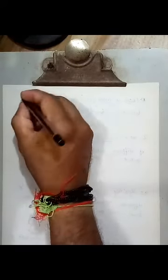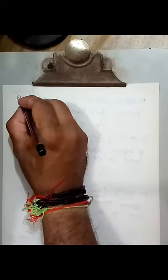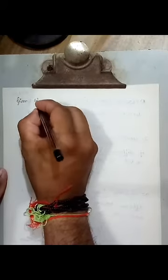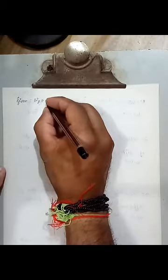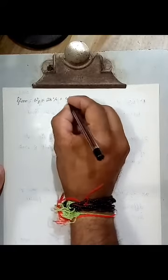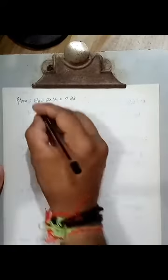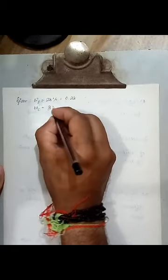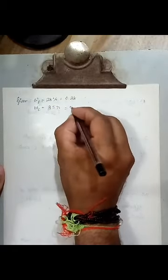So now we'll write down given. Hope you don't mind with my cough and cold, I'm just suffering through the cold. Given: plastic limit is 28%, that is 0.28 in terms of decimal. Water content is 35%, that is 0.35.